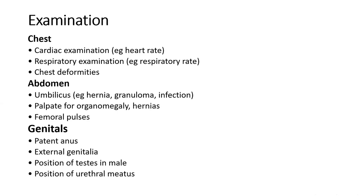Abdominal examination includes the umbilicus — checking for hernia, granuloma, or umbilical infection (omphalitis) — palpation for hepatosplenomegaly, hernias, and ascites. Femoral pulses are palpated and compared with upper limb pulses; a delay may indicate coarctation of the aorta. Genital examination assesses anal patency (low or high type), and external genitalia in both sexes, including testicular position and urethral meatus position in males to exclude epispadias or hypospadias.